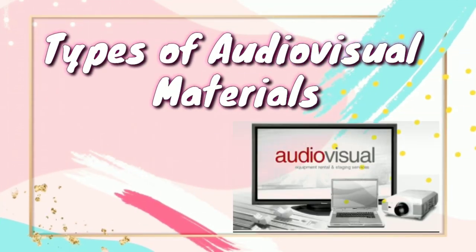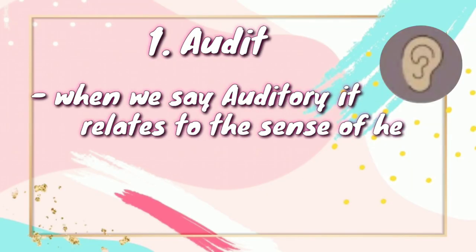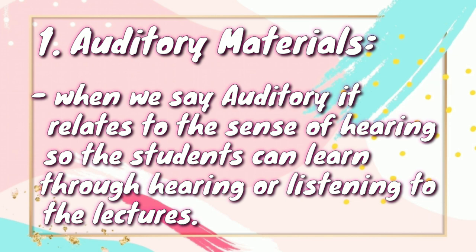Types of Audiovisual Materials. Number 1: Auditory Materials. When we say auditory, it relates to the sense of hearing, so the students can learn through hearing or listening to the lectures.